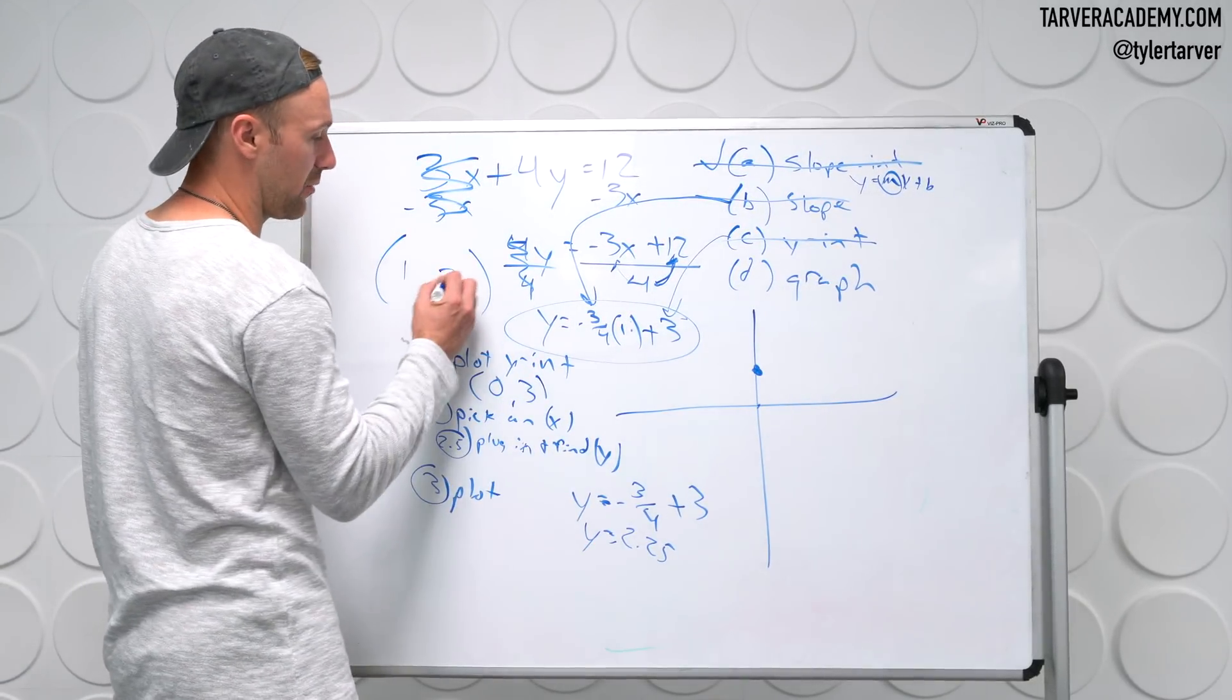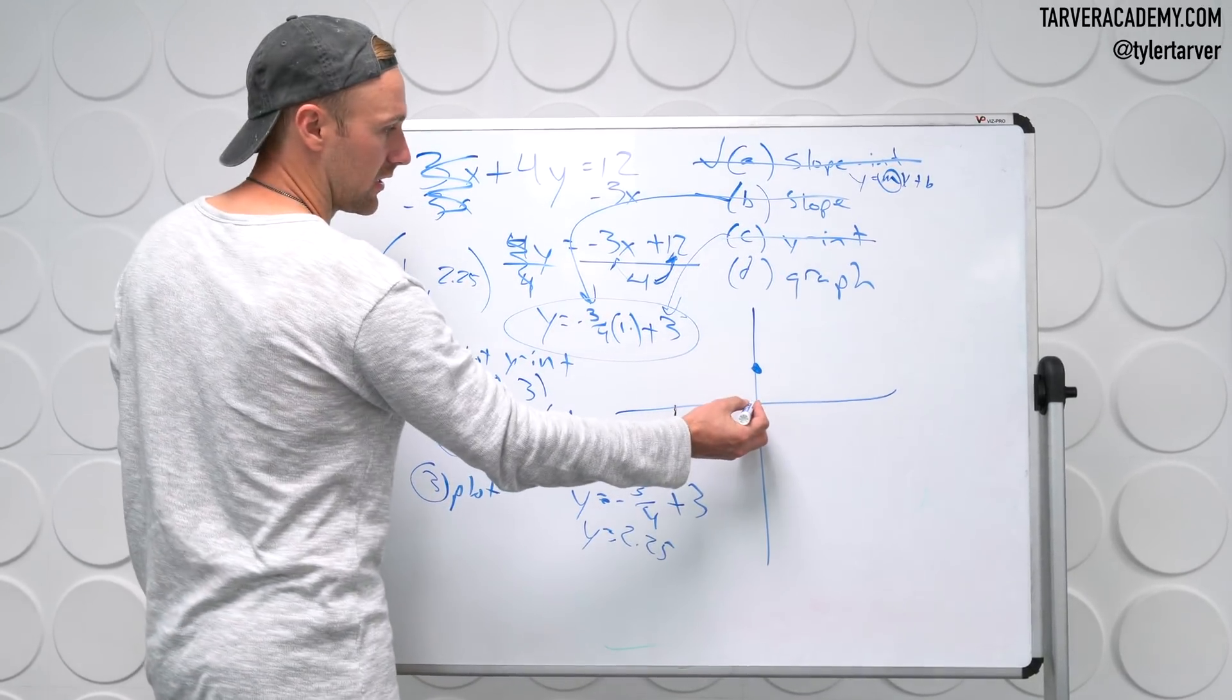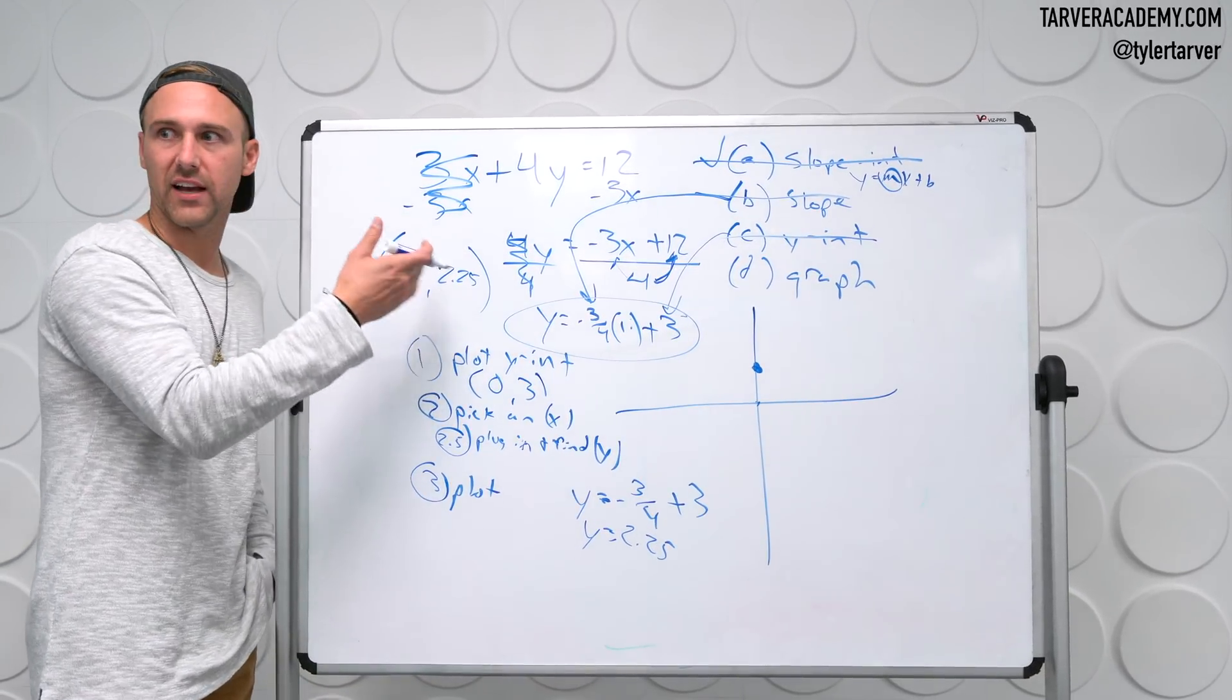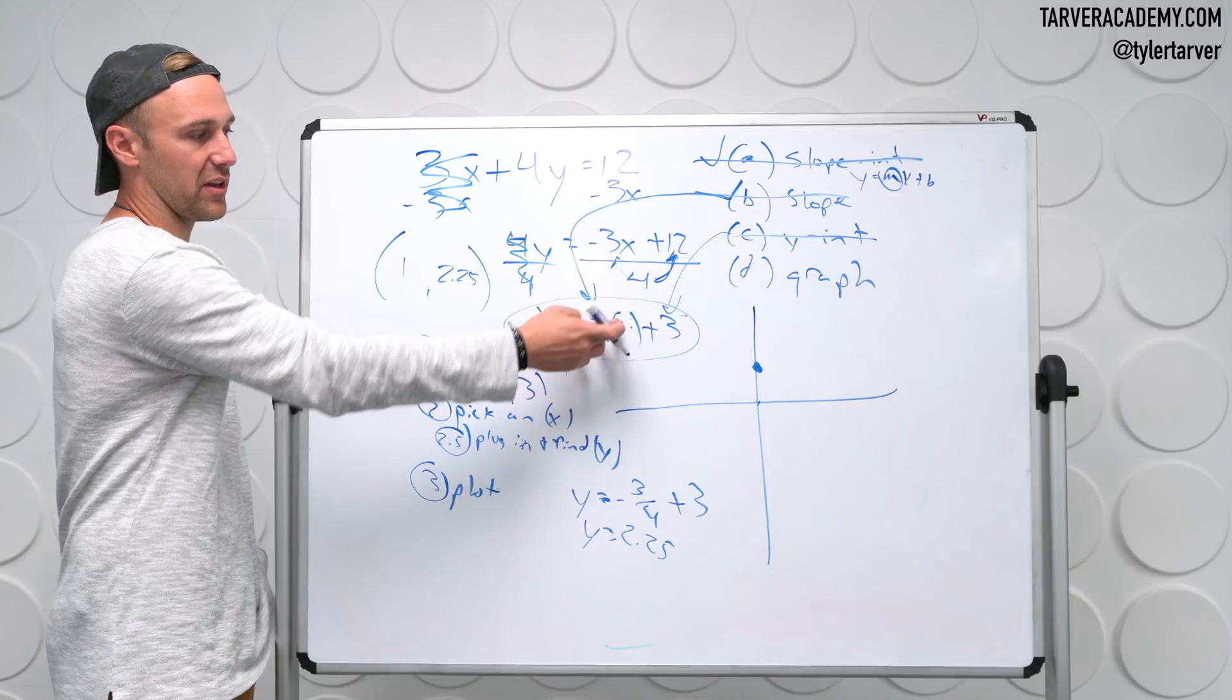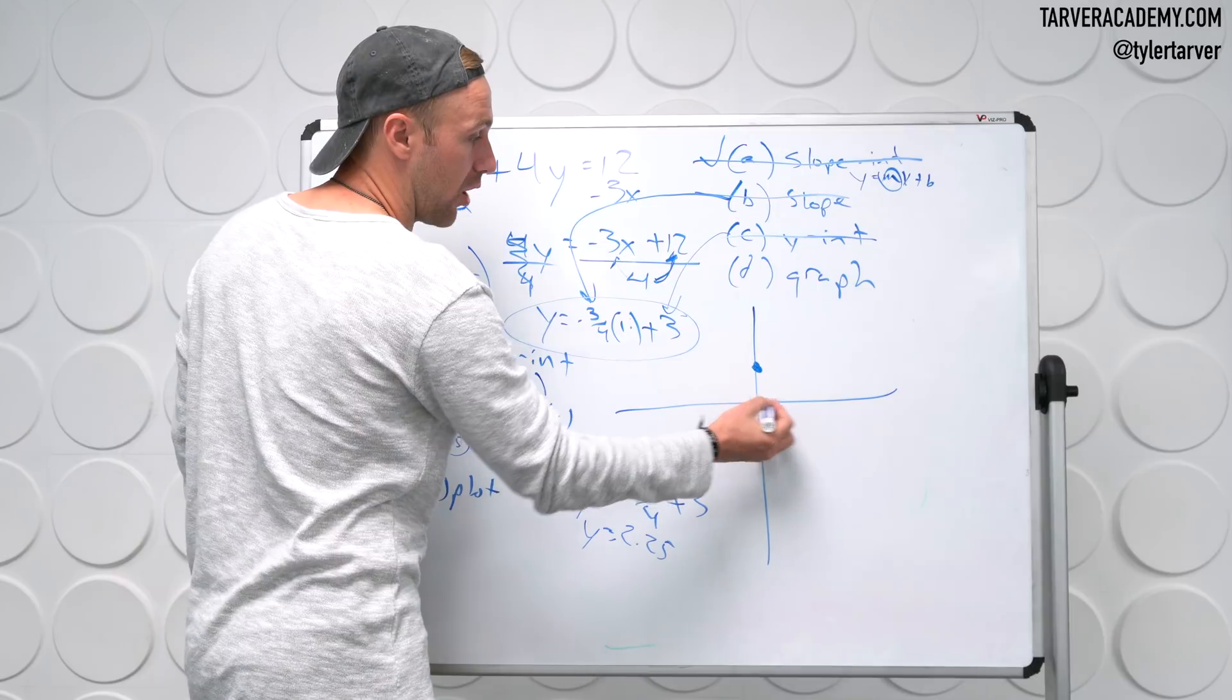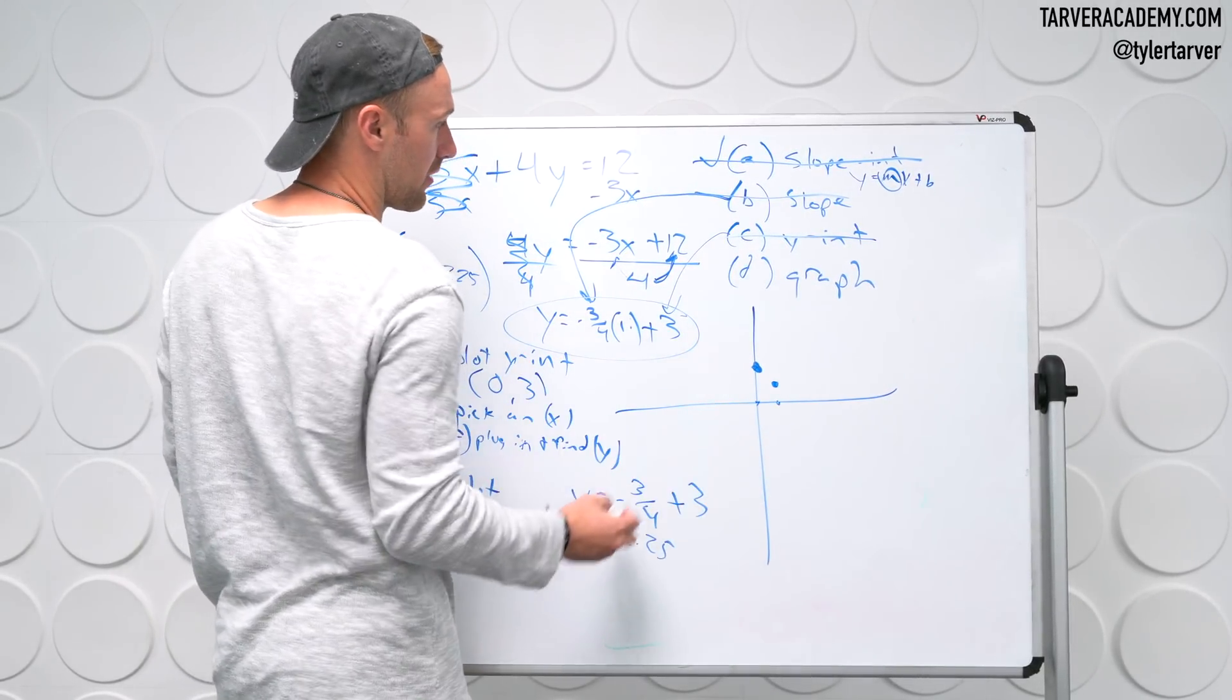So it'd be 2.25. Okay, here's, was there a problem with this coordinate that we're about to plot? It's kind of close. You know what I mean? We usually like to plot coordinates that are on like a perfect spot. That would have been hard to do unless we picked a number that would have made this into like a whole number. But we can go ahead and plot this. We're going to go over 1, up 2.25, boom.